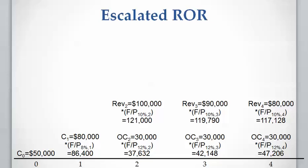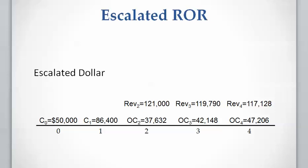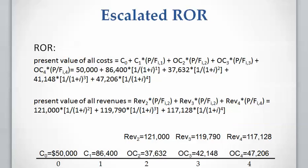To calculate the rate of return, we write the equation: present value of costs equals present value of revenue. Present value of costs includes all capital costs and operating costs, and present value of income equals the present value of revenues at years two, three, and four. We can also sum across each column with negative signs for costs to get the escalated dollar cash flow and write the rate of return equation — both approaches yield the same result. We then solve the equation for i.